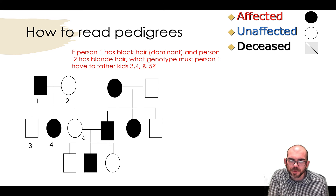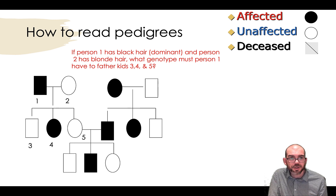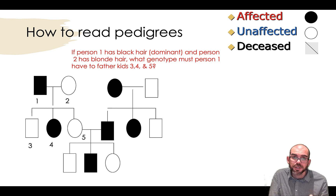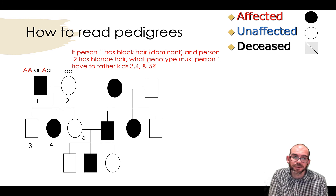Let's do a practice problem reading a pedigree. If person 1 has black hair — and you're being told that's dominant and that's the affected trait — and person 2 has blonde hair, what genotype must person 1 have to father kids 3, 4, and 5? On the left hand of this pedigree, individuals 1 and 2 have 3 children. This person is shaded and has the dominant trait of black hair, so they have two potential genotypes: big A, big A — I'm using A to represent dominant black hair — or they can be heterozygous, big A, little a. The female is recessive, so she's little a, little a.